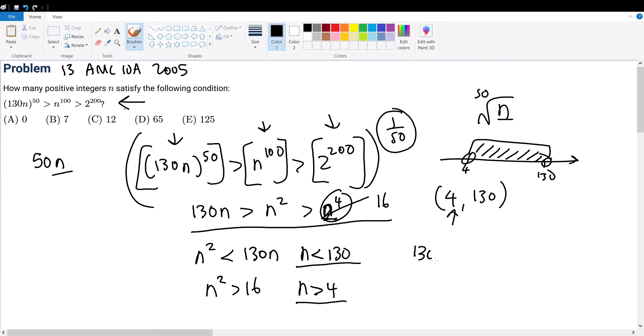it will be the endpoint 130 minus the start point 4 minus, not plus, 1. This is the answer. Why is it not plus 1 or why must we subtract 1 in the first place?